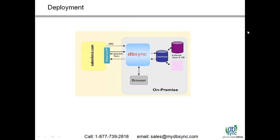Here's an overview of how DBSync is deployed. It sits on your premise, connected to your database, so you don't have to open ports on your firewall — it becomes a pure client. Salesforce communicates through web service APIs. We also have a real-time integration capability where we can push information directly into DBSync. For example, if you're running a resort and something is sold on Salesforce, you can have it reserved in your back-end system in real time with very low latency. All setup is browser-based, and once configured, you can drop it into any cron or Windows scheduler and it will just run.